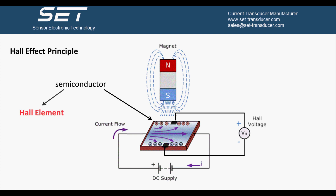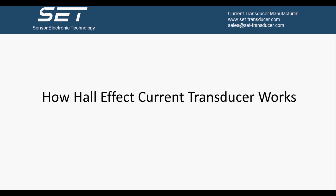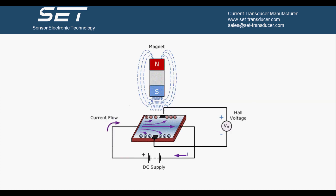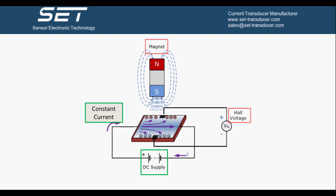The piece of semiconductor is also called a Hall Effect Element. Now let's see how Hall Effect Current Transducer works. According to the proportional relationship between the Hall Voltage, the magnetic field strength, and control current, we can design a device which provides a constant control current, so the Hall Voltage is only affected by the magnetic field strength.